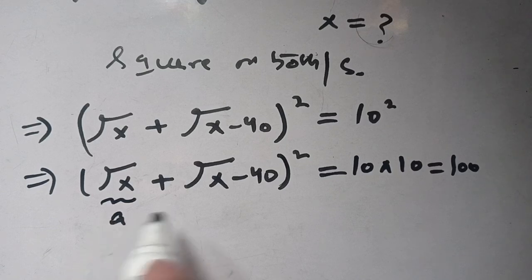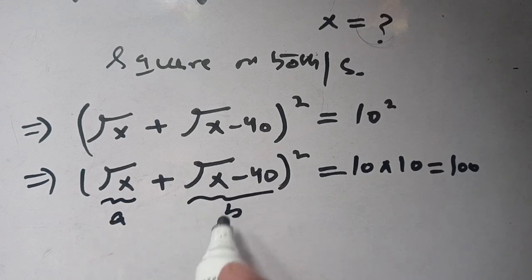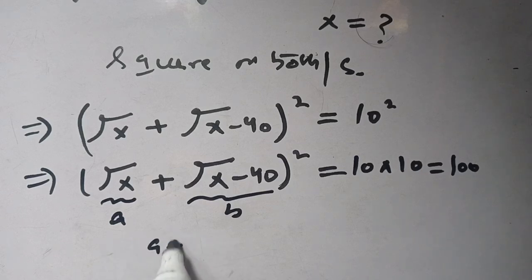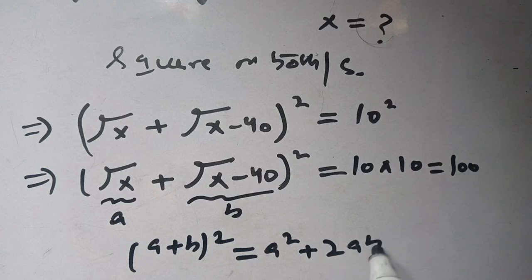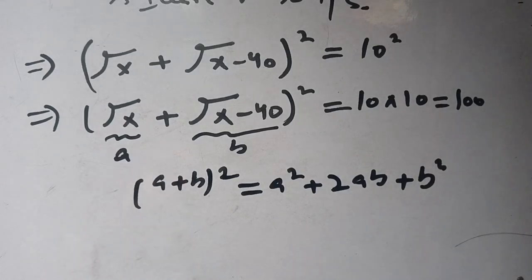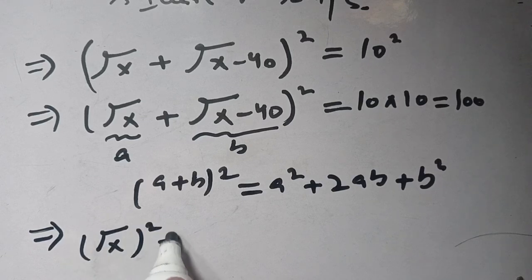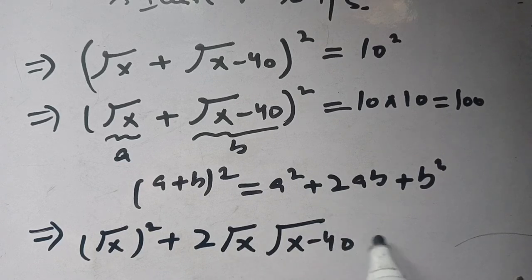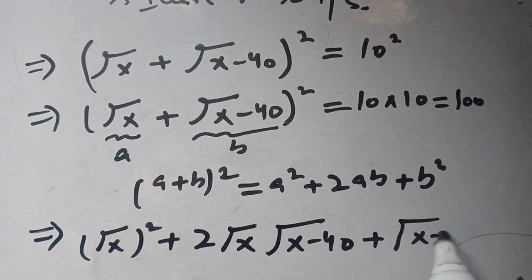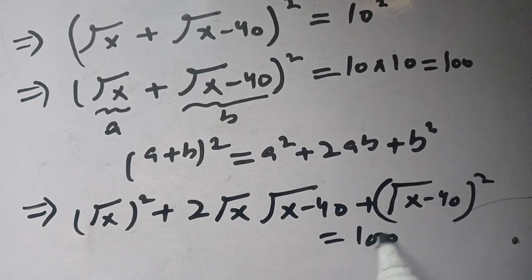Now let us consider that square root of x is equal to a, and square root of x minus 40 is equal to b. It is in the form of (a + b) whole square. We know that (a + b)² equals a² plus 2ab plus b². Using this identity on the left hand side, we get a² — meaning square root of x whole square — plus 2ab — meaning 2 times square root of x times square root of x minus 40 — plus b² — meaning square root of x minus 40 whole square — it is equal to 100.